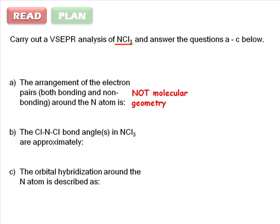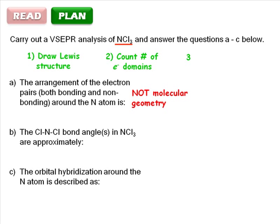Now, plan your approach. To do a VSEPR analysis, we first need to draw a Lewis structure to figure out where all the electrons belong. Then we can count the electron domains, and from there, determine the basic geometry of the molecule. This will give us all the information we need to answer the question.